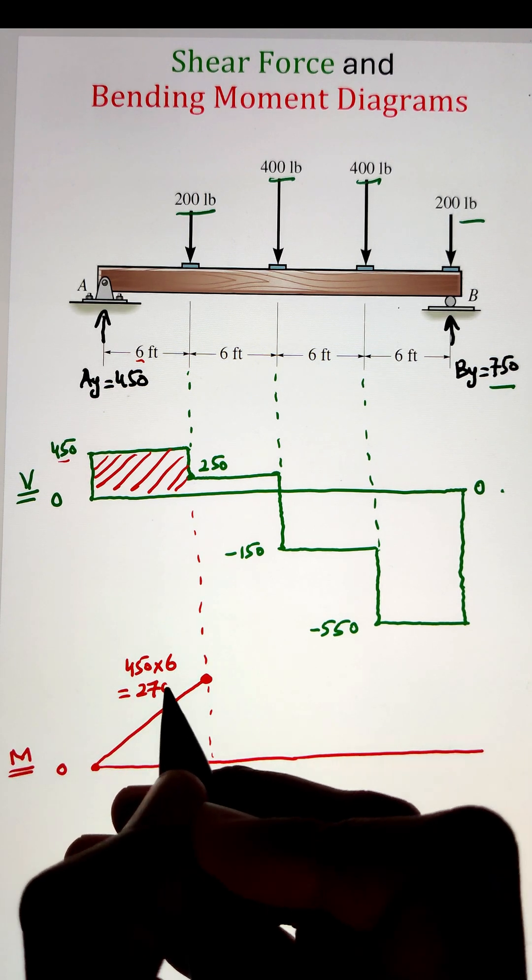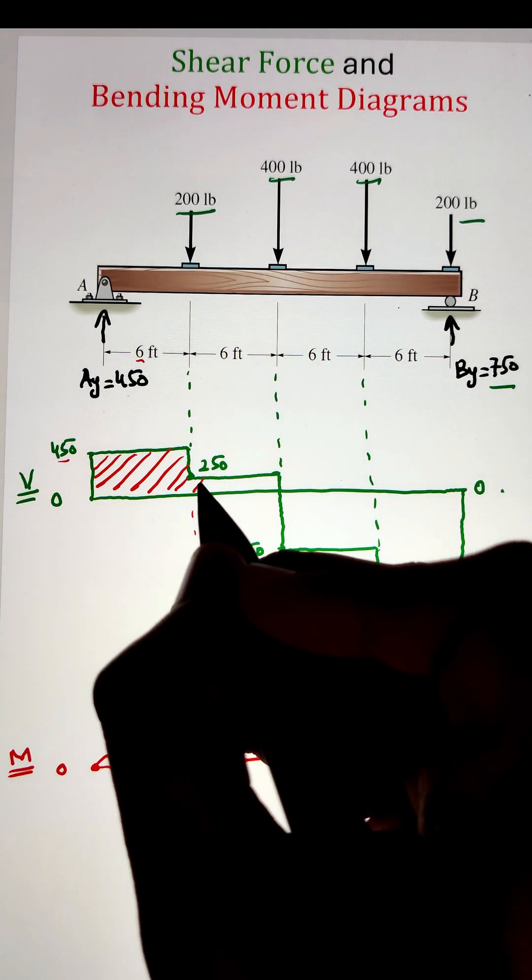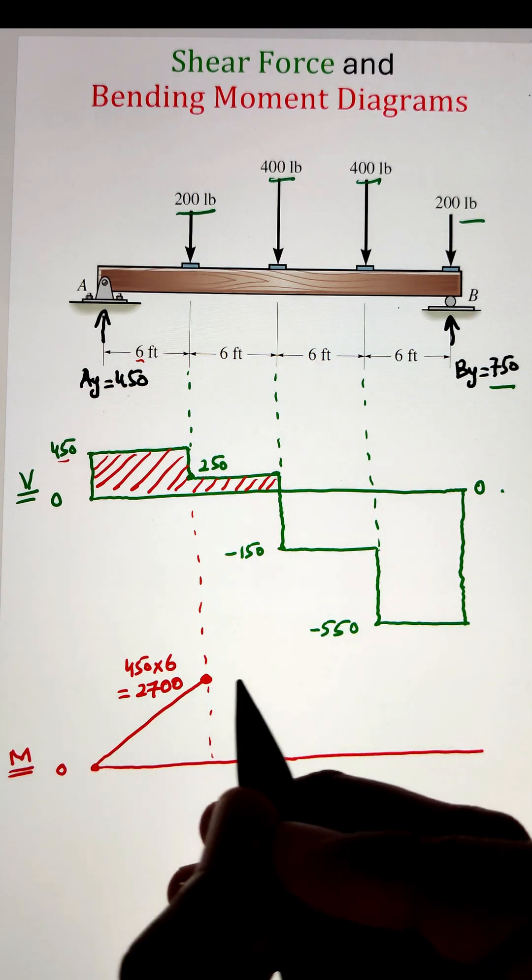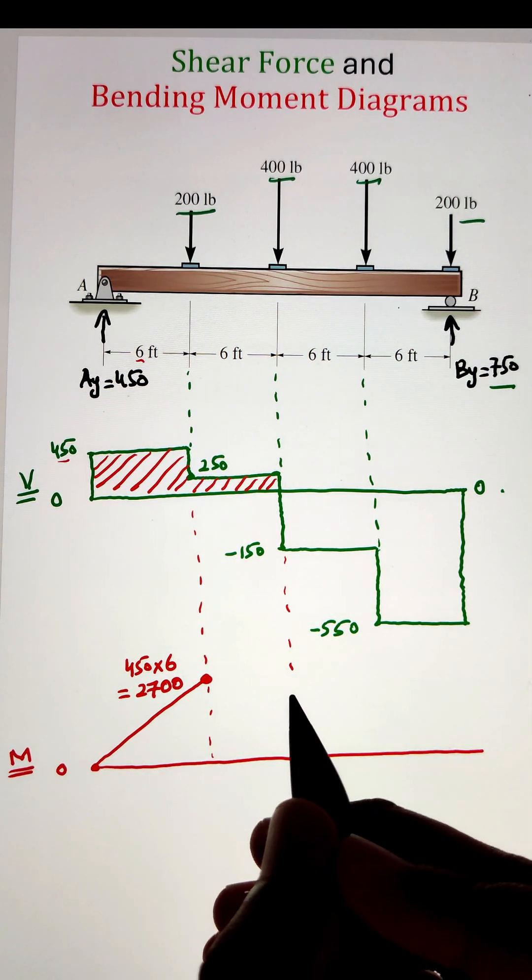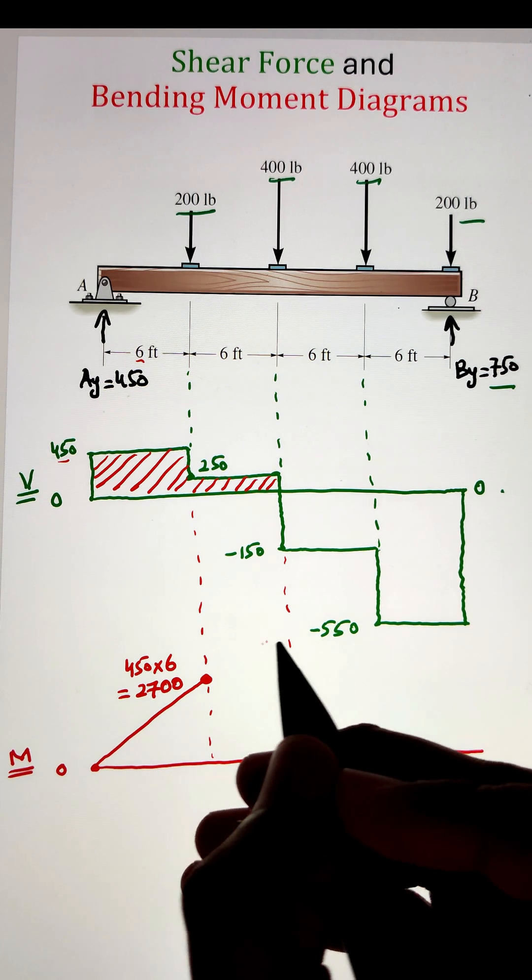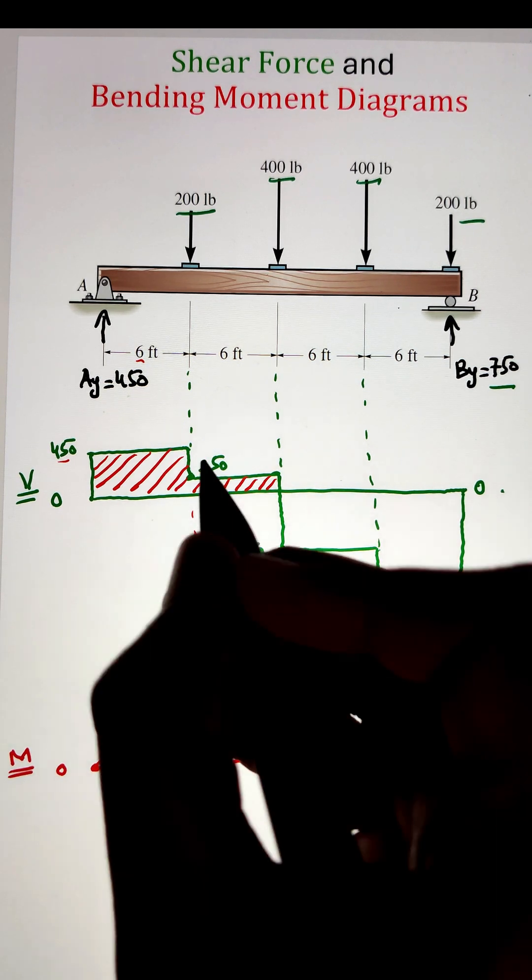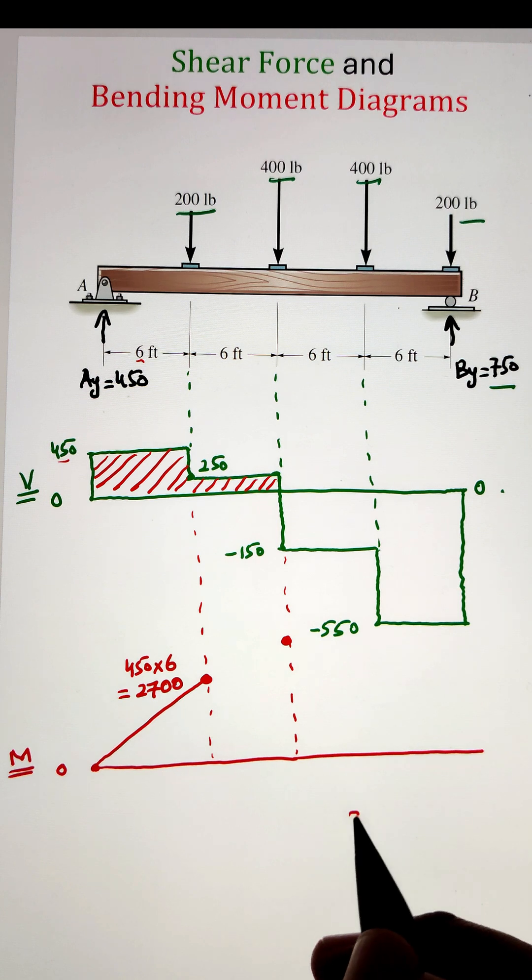Next, we have to figure out how this moment is changing from 0 to 2700. And we figure that thing out based on the slopes. So since the shear force diagram has a slope of 0 at this point, for the bending moment, the slope will be linear.